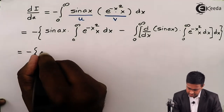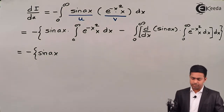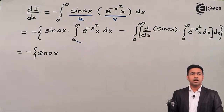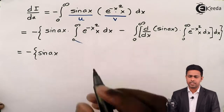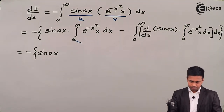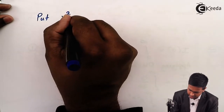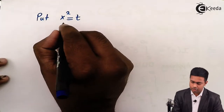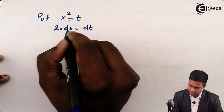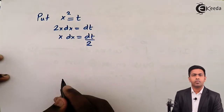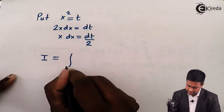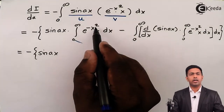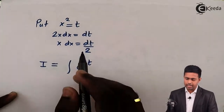Now sine(ax) remains as it is. You must be thinking how to find the integration of this term — for this we apply the method of integration by substitution. We put x² = t, which gives us 2x dx = dt, or equivalently x dx = dt/2. Our integral then becomes the integral of e^(-t) · dt/2.